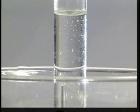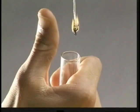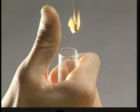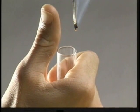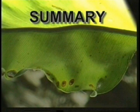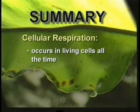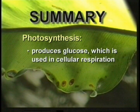To demonstrate that the gas in the test tube is oxygen, hold a glowing splint over the open test tube. Only oxygen will cause the splint to burst into flame. Cellular respiration occurs in living cells all the time. Photosynthesis in green plants and other organisms produces glucose, which is used in cellular respiration.